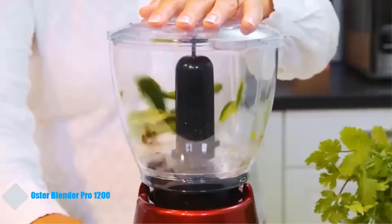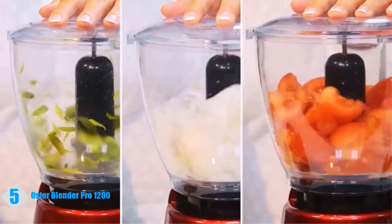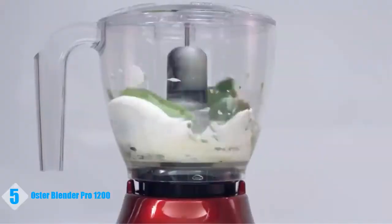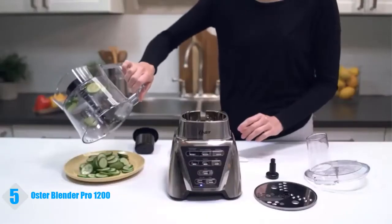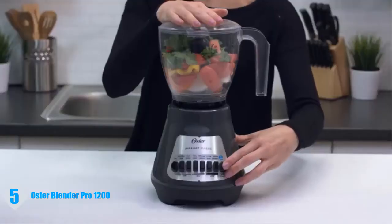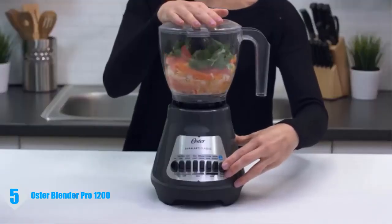Oster assembling your food processor attachment. Adding a food chopper or food processor attachment to your Oster blender expands your food prep capabilities. Here are the tips you need to assemble your food chopper or food processor accessory for optimal performance.